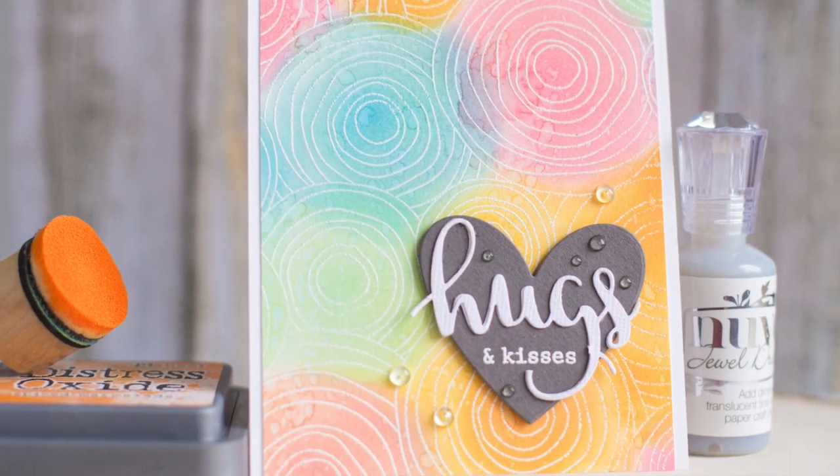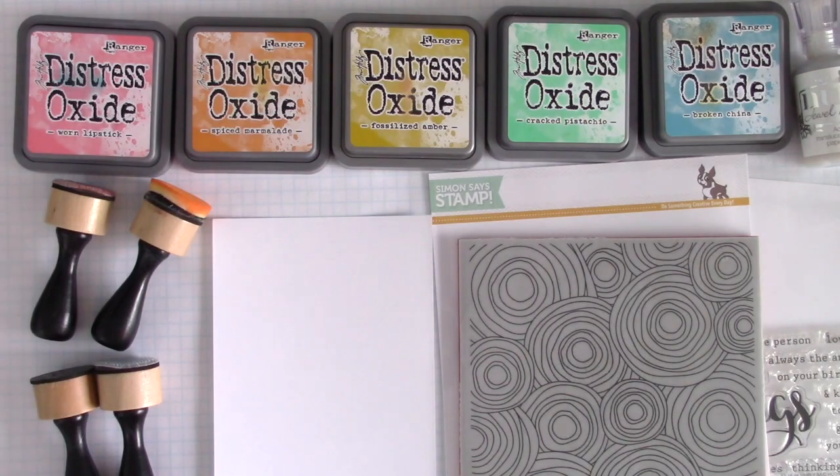Hi everyone, this is Rebecca Keppel and I am here with my take on this week's Simon Says Stamp Monday Challenge, which is to make a rainbow.